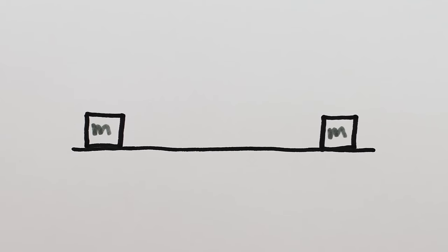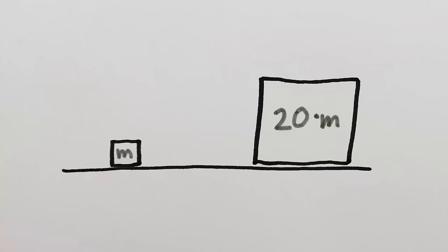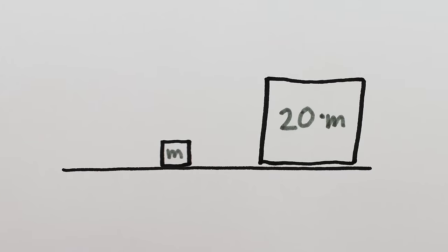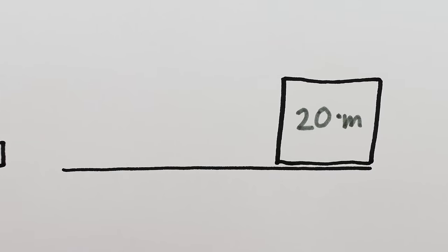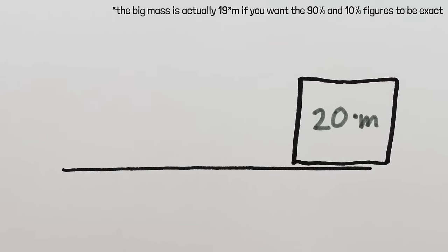For example, two identical objects coming in at the same velocity, they bounce off each other with the same velocity. One of those objects instead not moving, one stops, and the other starts. One object 20 times as big and not moving, the little one bounces back with 90% the speed, and the big one starts moving with 10% the speed. And so on.